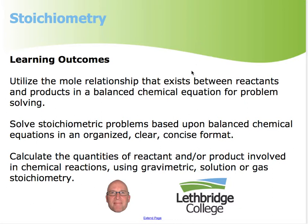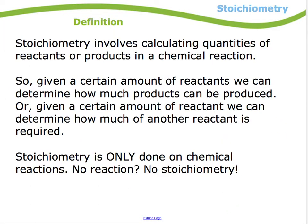We'll get into gravimetric, solution, and gas stoichiometry in subsequent scribble casts. So what is stoichiometry? Stoichiometry involves calculating quantities of a reactant or product in a chemical reaction. If I have a certain amount of reactant, I should be able to determine how much product I'm going to get, or how much reactant I could have started with.